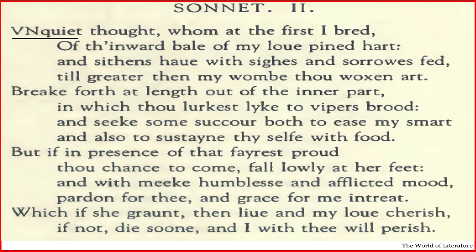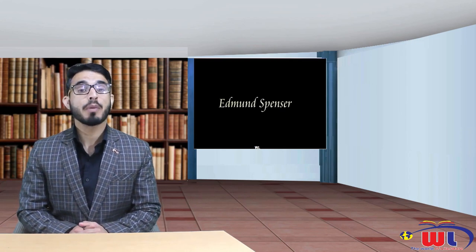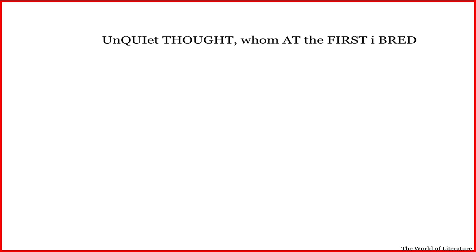Now let's first count the number of syllables in this verse. 'Un' is one syllable, 'quai' is another syllable, 'at' is the third syllable, 'thought' is the fourth syllable. 'Whom' — only one syllable; 'at' — only one syllable; 'the' — one syllable; 'first' — one syllable; 'I' — one syllable; 'bred' — one syllable.